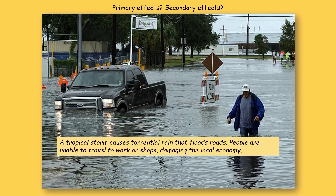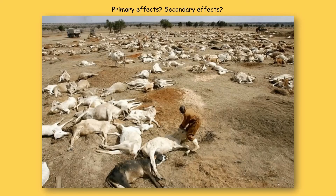In the exam, if you are asked to write about the effects of a natural hazard, state what the hazard is, then what the primary effect is, and then lead on to what the secondary effects are. If you write about it like this, that is a very well-developed sentence and this approach leads to a top grade.